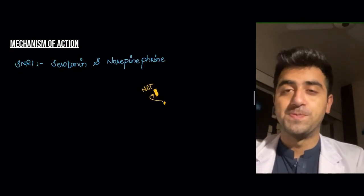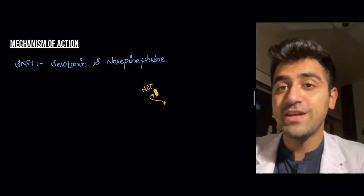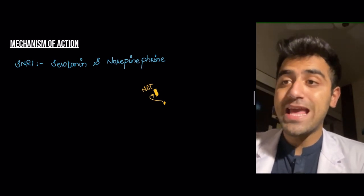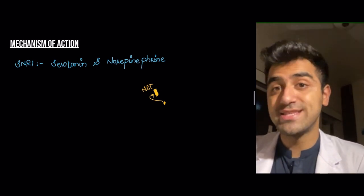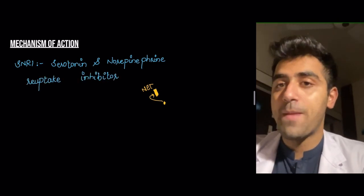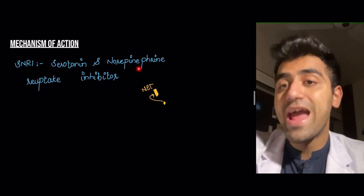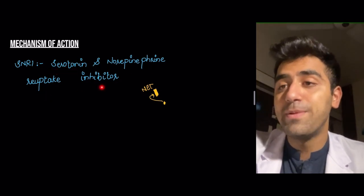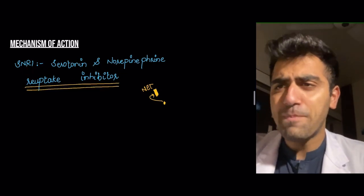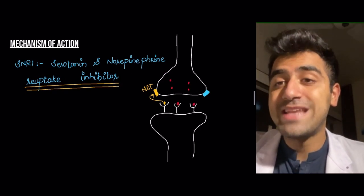What's the mechanism of action? If you've seen my video on SSRIs, you'll know that SSRIs inhibit the reuptake of serotonin in particular. Well, SNRIs has S as well as N, meaning it inhibits the reuptake of both serotonin and norepinephrine — serotonin and norepinephrine reuptake inhibitor. So this reuptake occurs in the synaptic cleft.